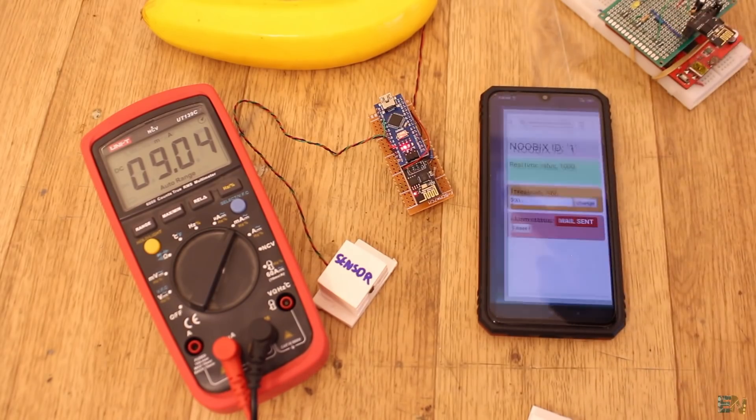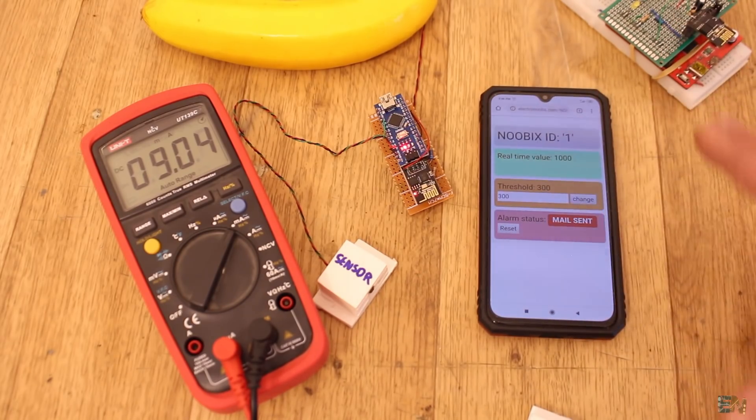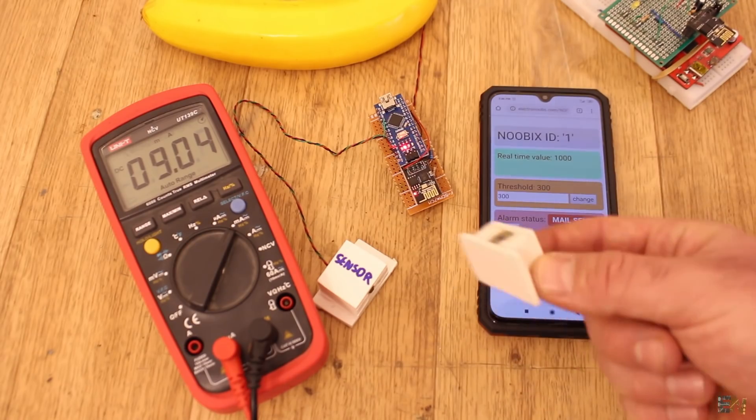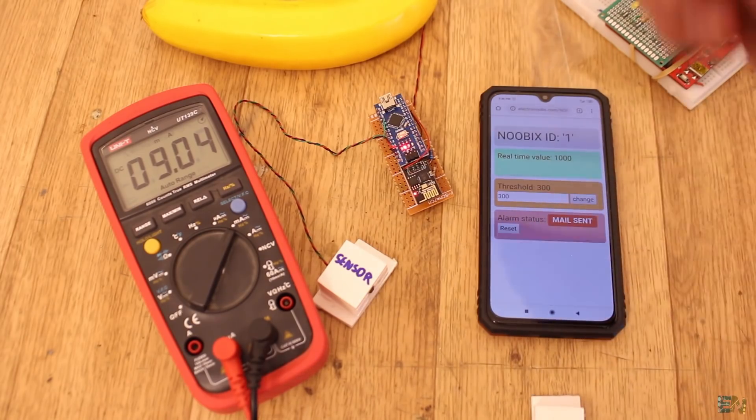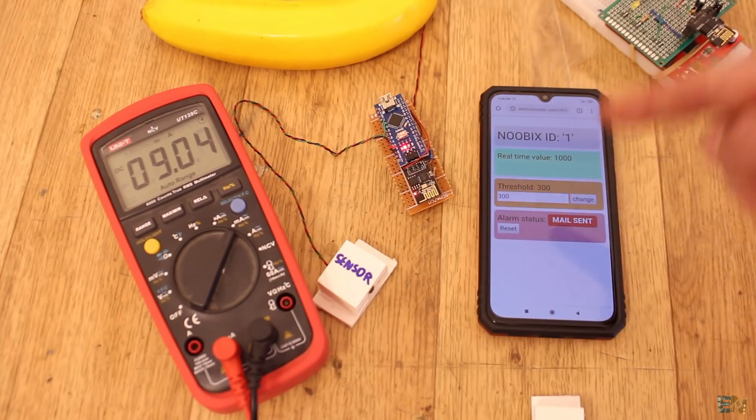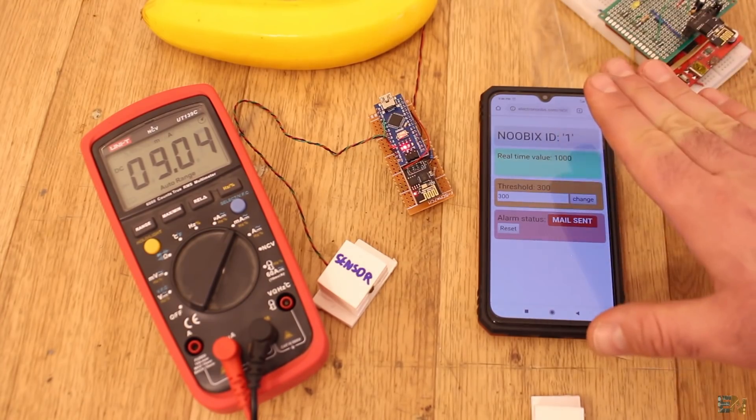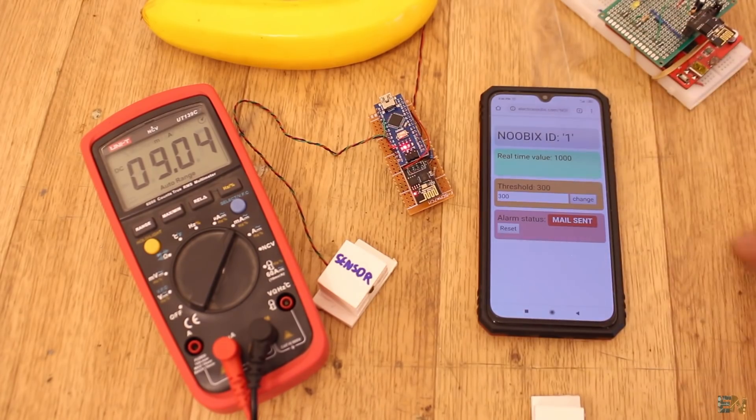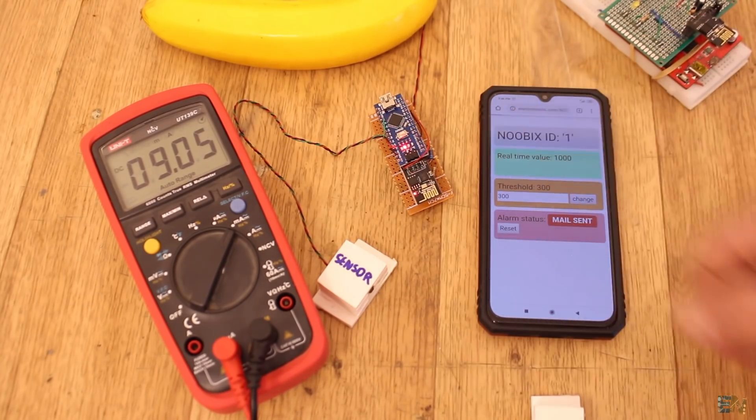So in this way, guys, from anywhere in the world you can know if anyone will open the door because if the magnet is separated from the sensor, this will wake up and send an email to your smartphone from anywhere in the world. This is not based on a LAN connection, this is based on an internet connection. Okay, so let's get back to the tutorial.